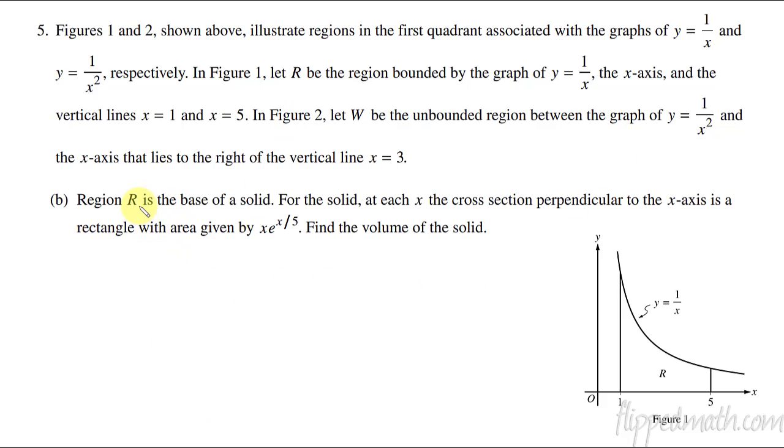For part B, we're looking at region R again. But now this is the base of a solid. We have cross sections that are perpendicular to the x-axis. X-axis is always a little easier. So we're having cross sections that are looking like this, and they come off the page and they form a rectangle. All of these little sections are forming rectangles, and it's going to create a solid.